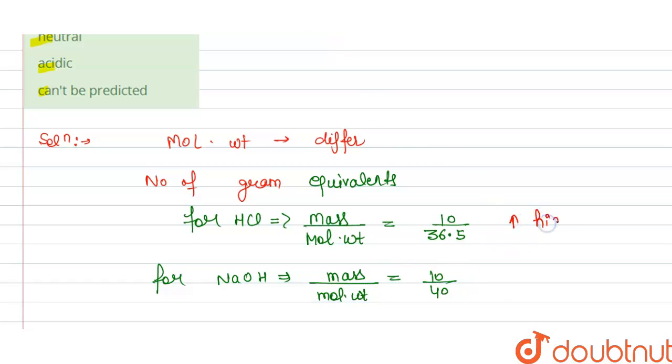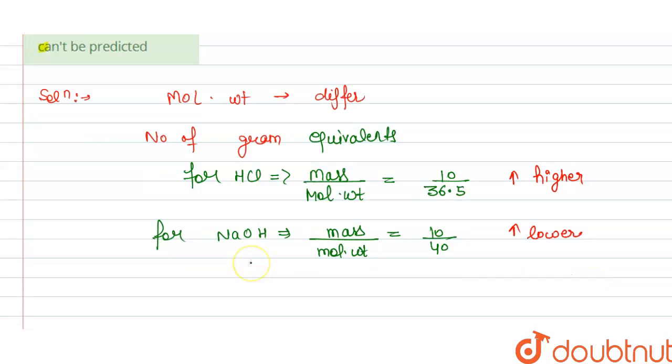this will be higher and this is lower than this, so acidic character will be more as the number of gram equivalent are more for the HCl. So we can say that resultant solution is acidic in nature and this is the answer, option C is correct. Thank you.